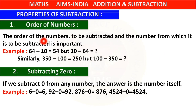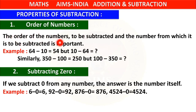Now let us learn about today's topic: properties of subtraction. We have learnt about properties of addition. In the same way, let us learn about properties of subtraction. Property number 1: order of numbers. The order of the numbers to be subtracted and the number from which it is to be subtracted is important.